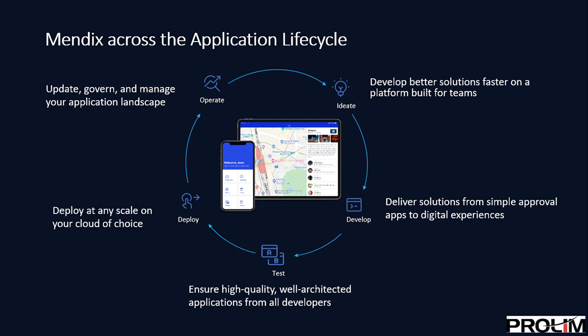Moving on to application lifecycle. Mendix operates in a simple manner: ideate, develop, test, deploy, operate, and then ideate again to add enhancements, and the cycle follows. You can develop better and faster solutions on a platform built for teams, deliver solutions from simple approval apps to digital experiences, share high-quality well-architected applications, deploy at any scale on the cloud of your choice, and govern and manage your application landscape from a single control panel.